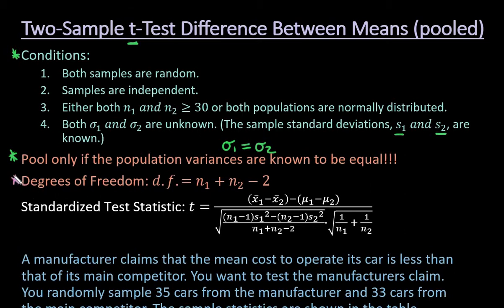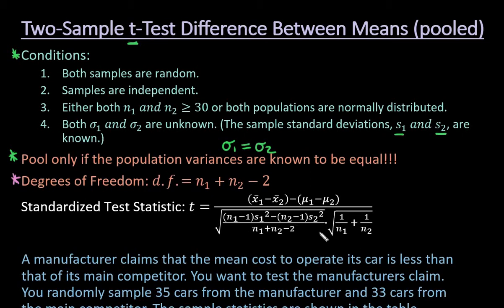The degrees of freedom when you are pooling is equal to N1 plus N2 minus 2. If you're not pooling, the degrees of freedom are different — I do have a video that shows how to do it when you are not pooling. To find the standardized test statistic, this is the one formula I do not require my students to show the work on, but if you are required, this is the formula you would use. Check your textbook because the denominator can be found in different ways.